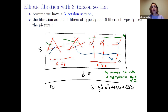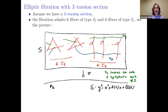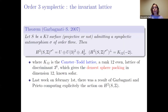This matches the classification of Mukai–Nikulin, which says a symplectic automorphism of order three has exactly six isolated fixed points. One can then describe the Néron–Severi group and the transcendental lattice of the fibration, and compute the invariant lattice, which essentially contains the transcendental lattice plus the invariant part of the Néron–Severi group.